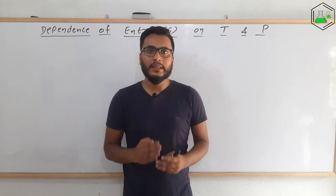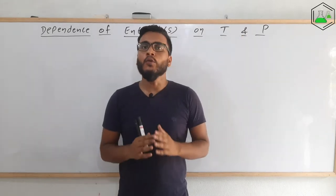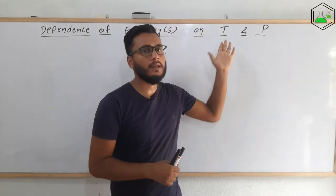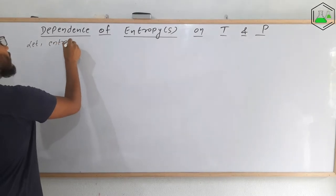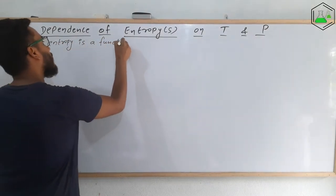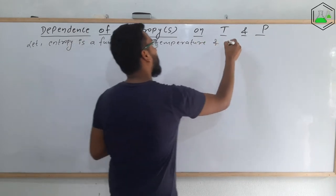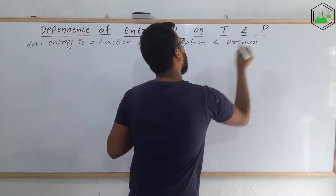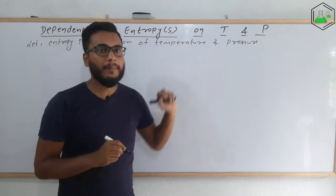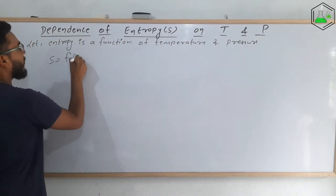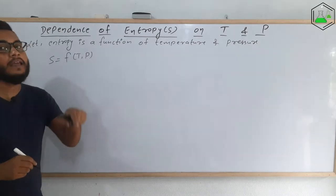We know that entropy is a state function — it only depends on the initial and final state. Also, entropy depends on temperature and pressure. So we can express entropy as a function of temperature and pressure. Let entropy be S = f(T, P). As this is a function, we can apply Euler's theorem of exactness here.